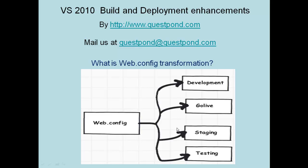Normally when we talk about the web.config file, it has connection strings and configuration values which your application needs. Depending on the environment — whether it is a development environment, a go-live environment, or a staging environment — the web.config file values can change. This can be quite confusing if you have a large number of environments where you want to deploy web.config files with different values.